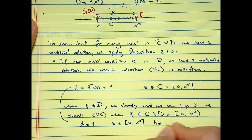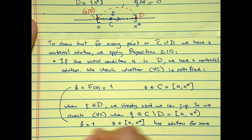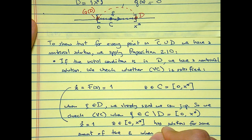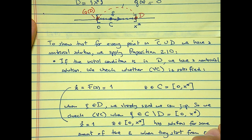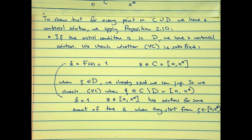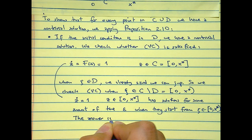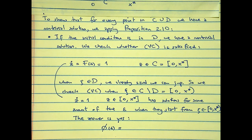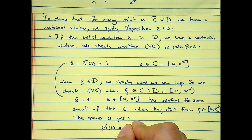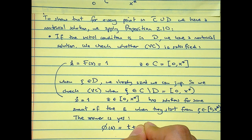This boils down to check whether Z dot equal to 1, Z in 0 X star has solutions for some amount of time epsilon when they start from Z in 0 X star. And the answer to me is yes.